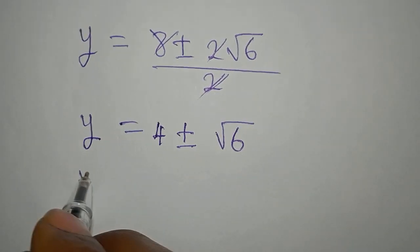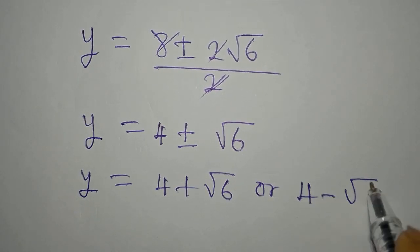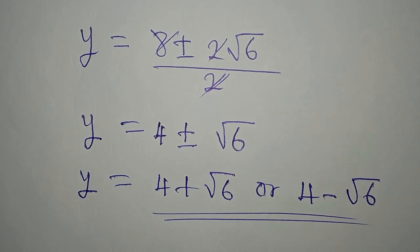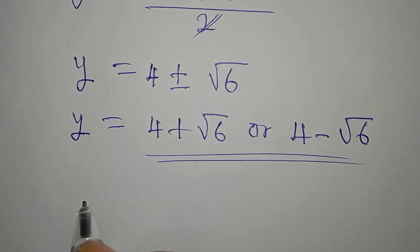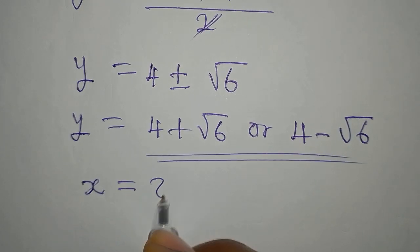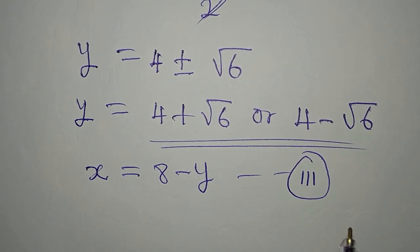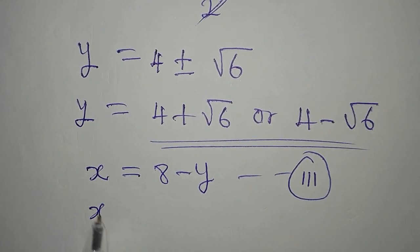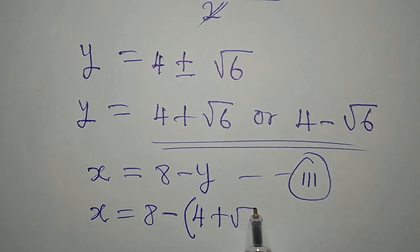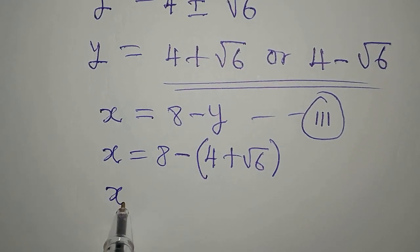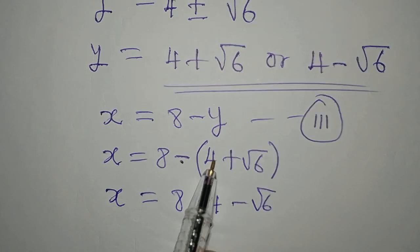So this means that y is equal to 4 plus root 6, or 4 minus root 6. Now let's get our corresponding values of x. Remember, we said x is equal to 8 minus y — we called this equation 3. We are going to use equation 3 to get the value of x. So our x will now be 8 minus, open bracket, in place of y I will write 4 plus root 6. To open the bracket, x will be equal to 8 minus 4, then minus root 6, because negative times 4 gives negative 4, and negative times root 6 gives negative root 6. So x equals 8 minus 4, which is 4, then negative root 6.